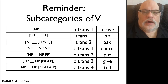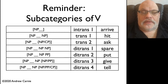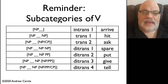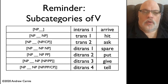A verb like hit requires a noun phrase or a DP. A verb like put also requires a prepositional phrase. So it's clear from these cases that category is one piece of information that must be stored with the lexical entry.